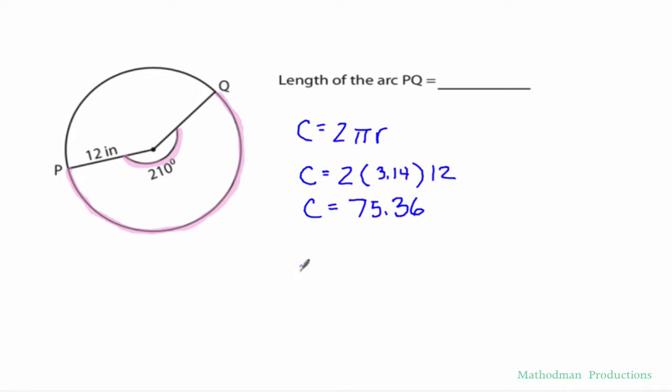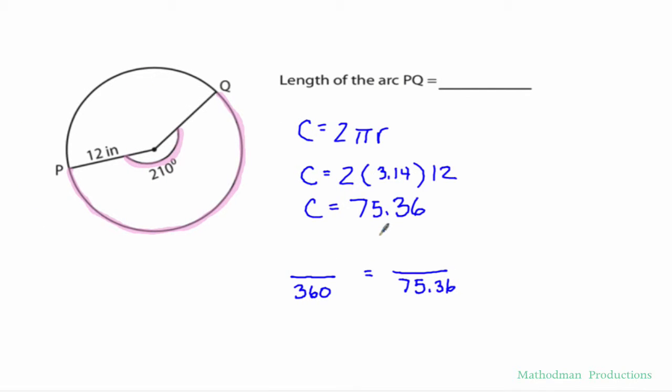If I set up a proportion right here, a whole circle is 360 degrees. I know that 360 degrees has the distance of 75.36. So that's throughout the whole thing. Now I just have to match it up with my central angle, 210 degrees. 210 degrees goes through that arc length PQ, which is what I'm trying to find. I don't know what distance that is. We'll leave that as x.